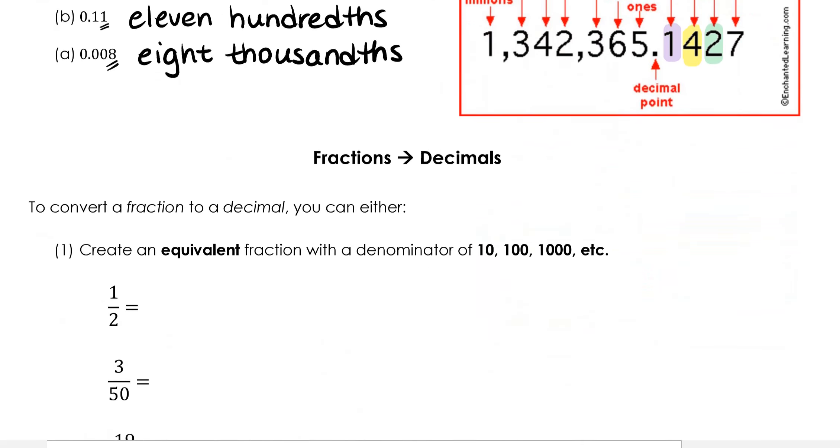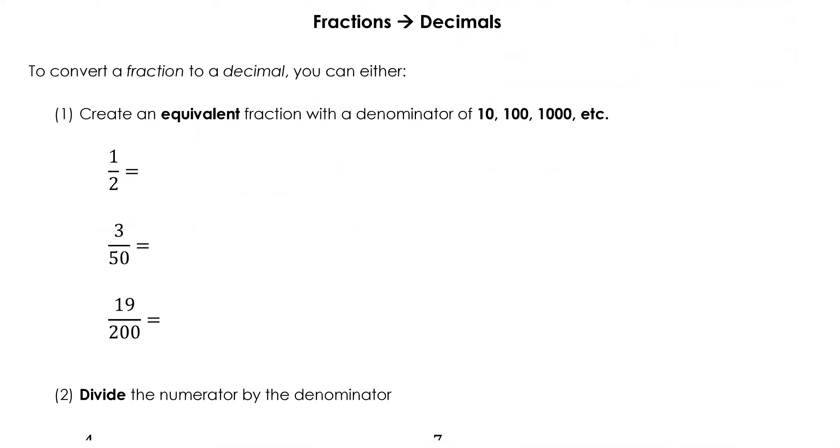Let's recap how to convert fractions into decimals. There's two main ways to do it. The first way you could do it, if you didn't have access to a calculator, is that you could create an equivalent fraction with a denominator of 10, 100, 1000, or so on, so that you can then express that number in terms of tenths, hundredths, etc. Our first example is 1 half. The fastest way to get this with a denominator of 10, 100, or 1000 is to simply multiply top and bottom by 5. This will give us 5 over 10, which is equivalent to 5 tenths.